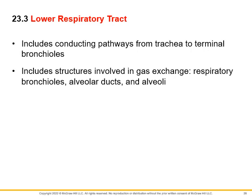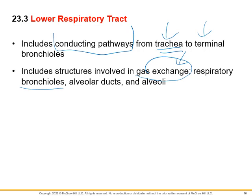Now we move on to the lower respiratory tract — the conducting pathways bringing air to the alveoli. We'll talk about the trachea, right and left bronchus, bronchioles, and terminal bronchioles. Then we'll look at the structures involved in gas exchange: respiratory bronchioles, alveolar ducts, and the alveoli themselves.